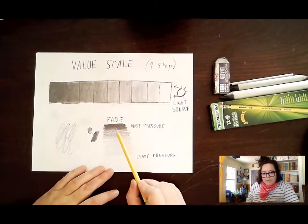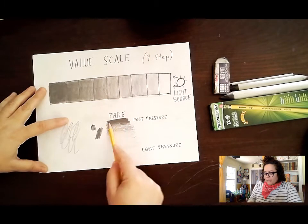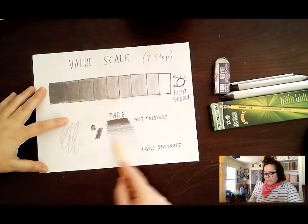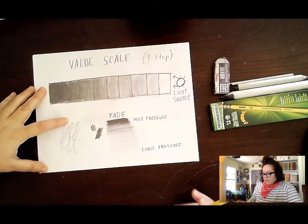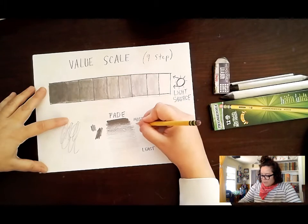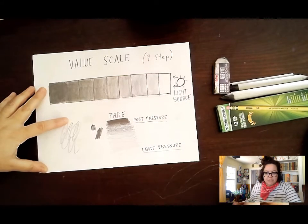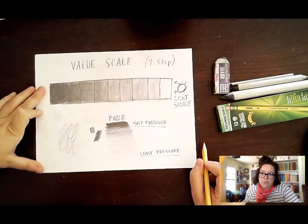A fade is where you basically push down really hard, and then as you move away from that dark area you lift up your pencil more and more and leave less and less pressure. As you can see, this is where the most pressure is and down here is where the least pressure is. That just means how hard you're pushing down with the pencil.